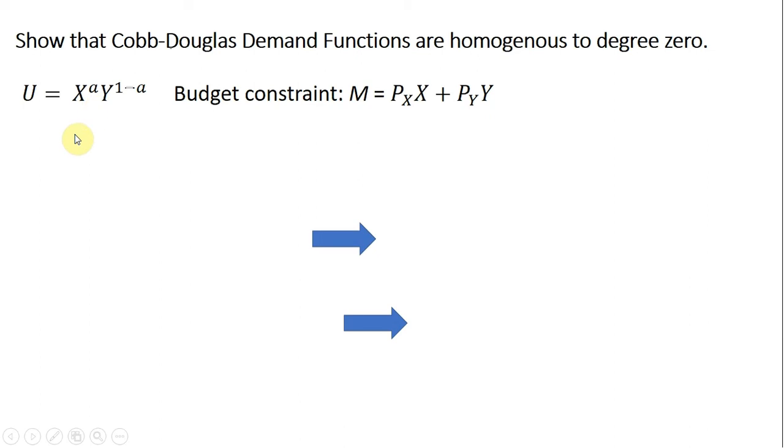Here's our utility function, U = X^a Y^(1-a), a function of good X and good Y, the consumer's budget constraint, M is the consumer's income, and we've got the respective prices here, P_X and P_Y.